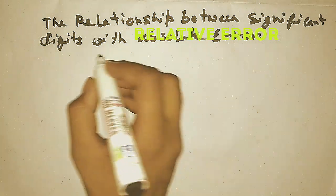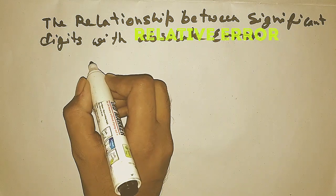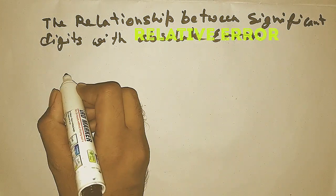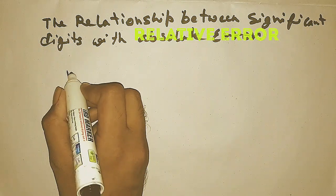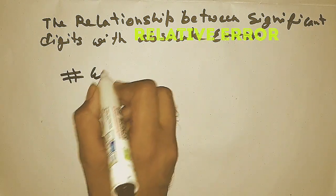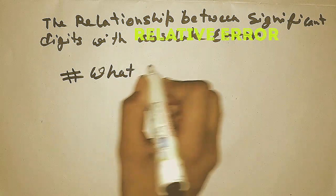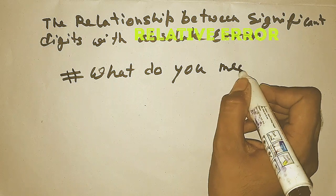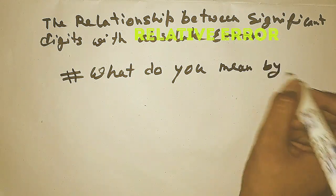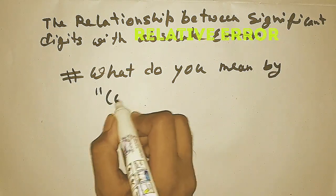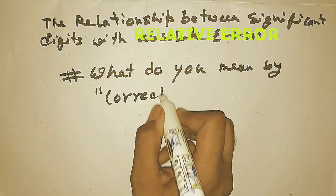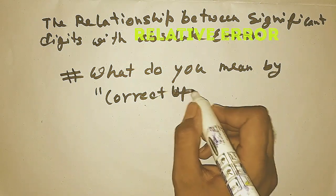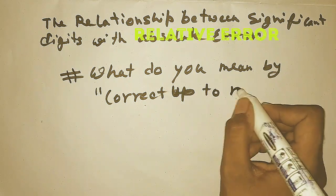Today we are going to learn the relationship between the significant digit and the relative error. First we need to know what significant digits are. We always say 'correct up to n significant digits' — so what does this mean?